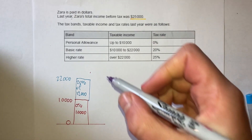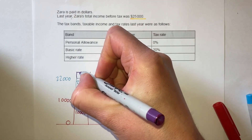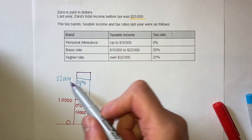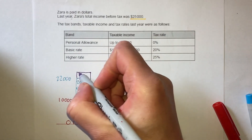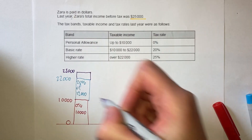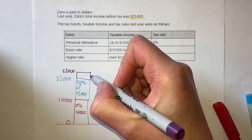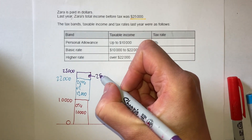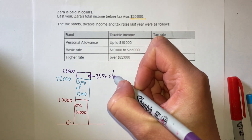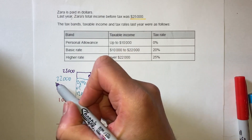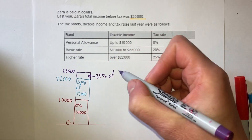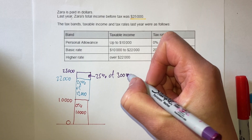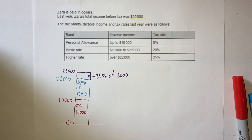I need $25,000, so I need an additional $3,000 to get to the total. In this box I need 25% — remember it goes from $22,000 to $25,000, so that's $3,000. Now I can calculate these amounts.